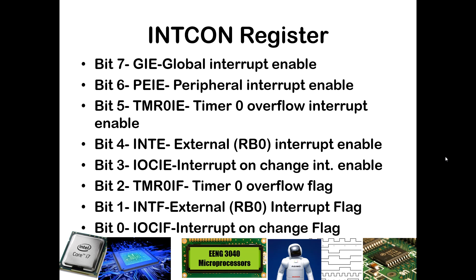The main register to be aware of when talking about interrupts is the INTCON, short for Interrupt Configuration Register. Bit 7 is the most important bit — that is the GIE, or Global Interrupt Enable. Without setting this bit, no interrupts can occur. If this is set, the specific interrupts that are individually enabled by an enable bit can occur. If you want to enable any of the 20 peripheral interrupts, you must also set the PEIE bit, which is the peripheral interrupt enable.